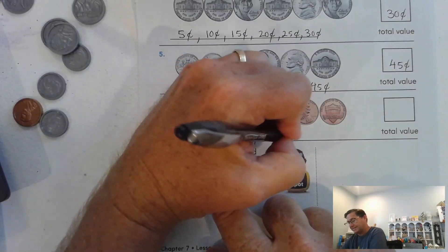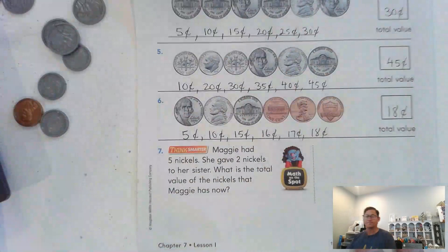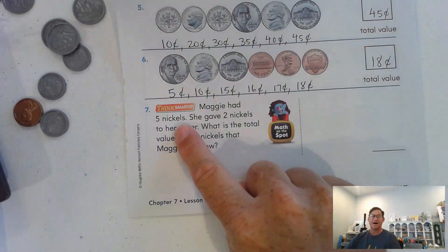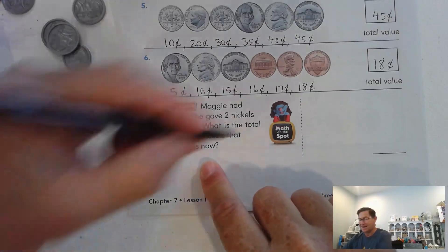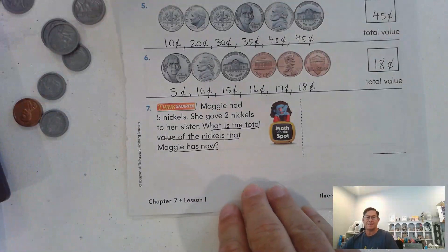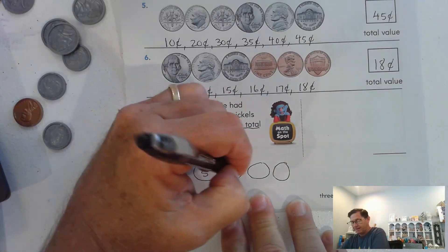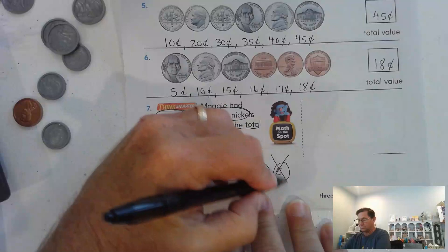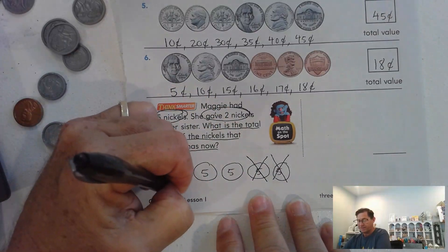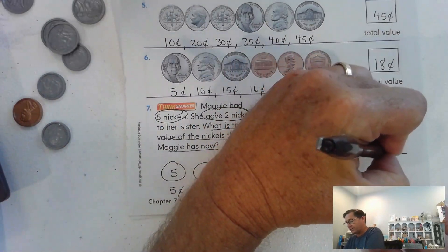What is the total value of the nickels that Maggie has? She had five nickels. I'm just going to write five to represent nickels. She gave two to her sister, so we don't have those anymore. How much does she have? She has five cents, ten cents, fifteen cents. The value of her coins is fifteen cents. Let's look at page 348.